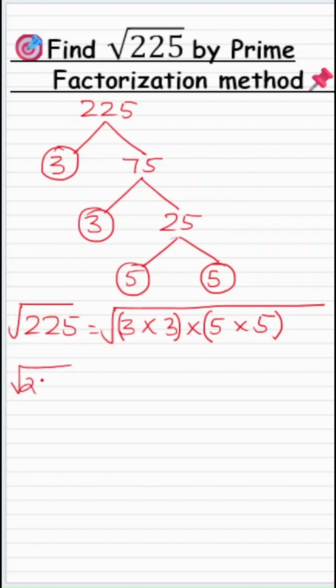So square root of 225 is equal to, I will write one number for this group, that's 3, and one number for this group, that is 5. So square root of 225 is 15, and that's all.